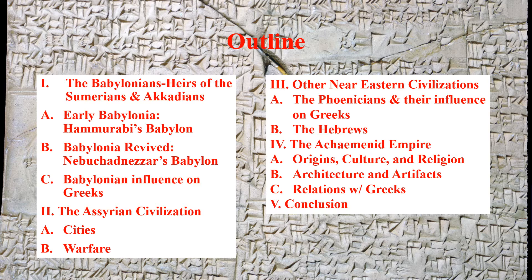Finally, we'll conclude our discussion of the ancient Near Eastern civilizations by talking about the Persian Empire, also known as the Achaemenid Empire. We'll talk about the origins, culture, and religion of the Achaemenid Empire, and then we'll talk about some of their architecture, artifacts, and people.